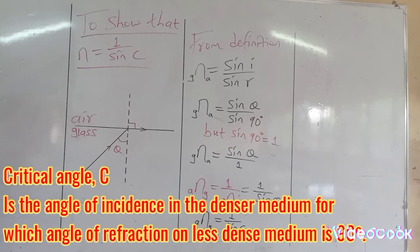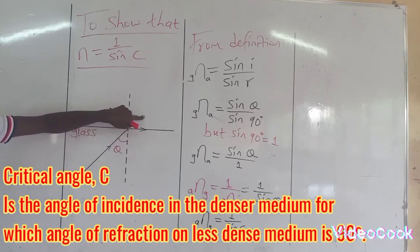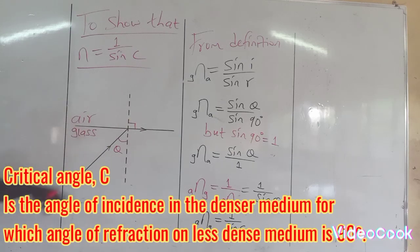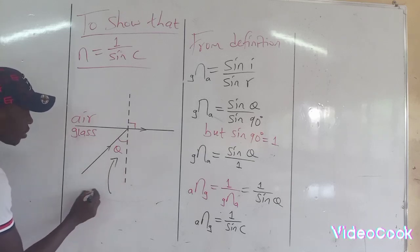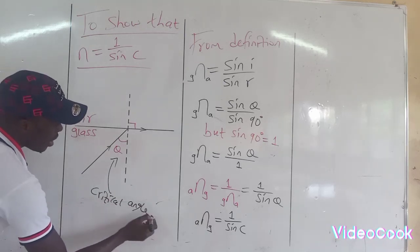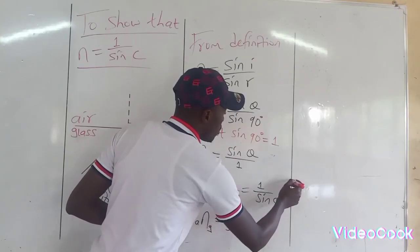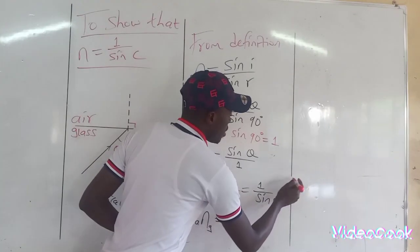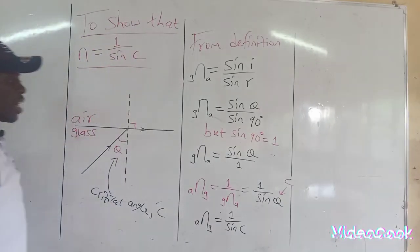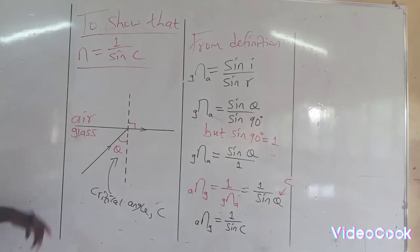So why are we saying sine c? The reason is that the angle of incidence in the denser medium which gives you an angle of refraction of 90 degrees in the less dense medium is known as the critical angle. So this angle theta is known as the critical angle c. Theta is the critical angle c, because the angle of incidence in the denser medium which gives an angle of refraction of 90 degrees in the less dense medium is known as the critical angle c.